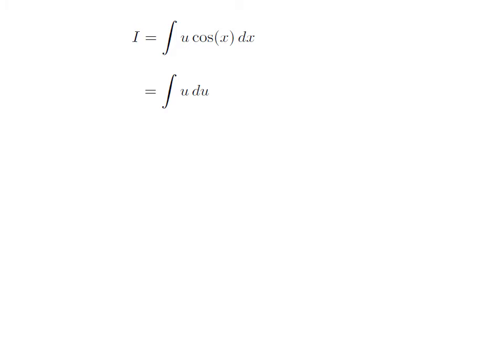As cosine of x into differential of x is equal to differential of u, so substituted cosine of x into differential of x with differential of u, we got I is equal to integration of u with respect to u.